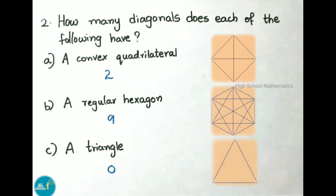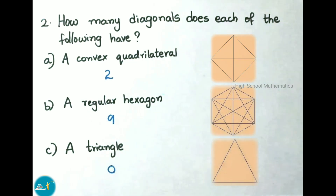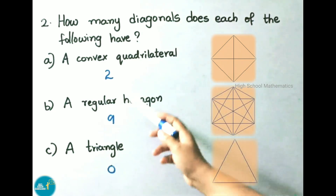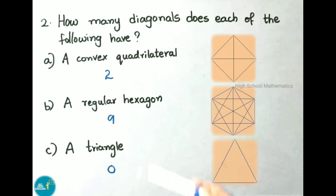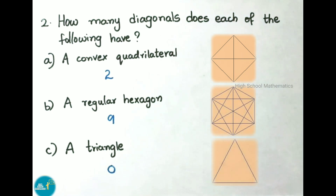Question number 2: how many diagonals does each of the following have? Question A, a convex quadrilateral: a convex quadrilateral has only two diagonals. Question B, a regular hexagon: a regular hexagon has 9 diagonals. Question C, a triangle: a triangle has no diagonals.